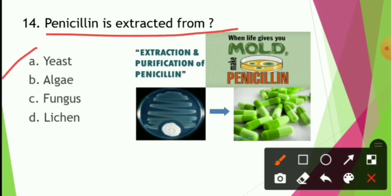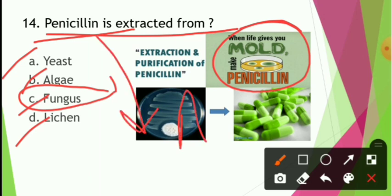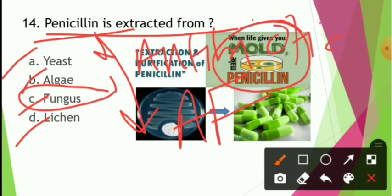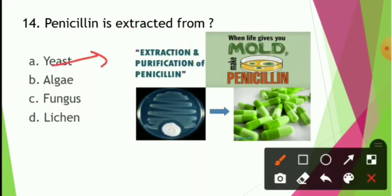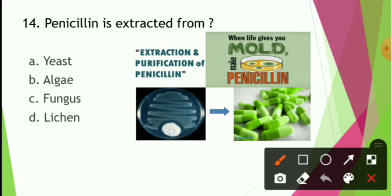Penicillin is extracted from yeast, algae, fungus, or lichen? Penicillin is made from mold or fungus — the answer is option C, fungus. Penicillin was discovered by Alexander Fleming and is used as an antibiotic. Note: yeast is used in fermentation. Algae plus fungus together make lichen, which is a pollution indicator. Penicillin is extracted from obstinate fungus.